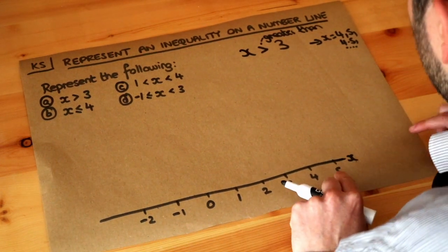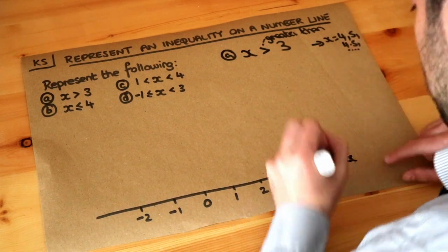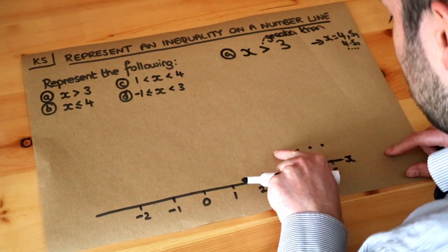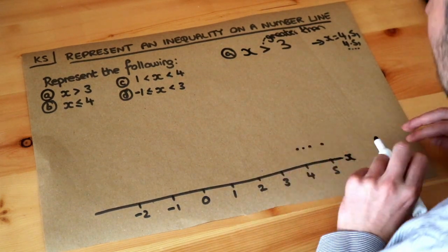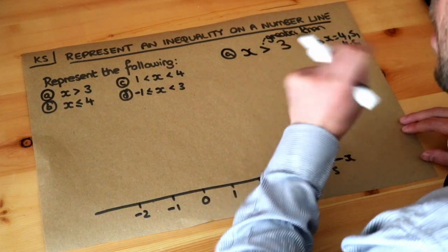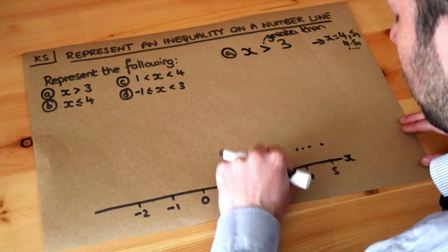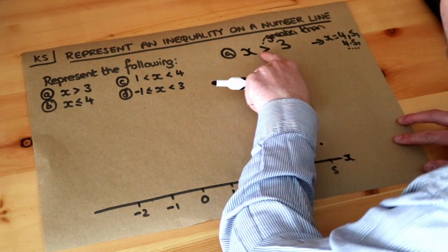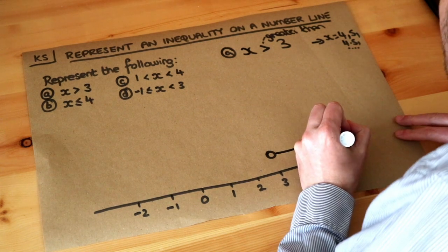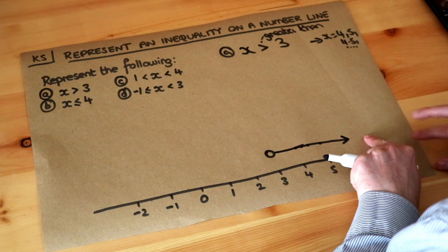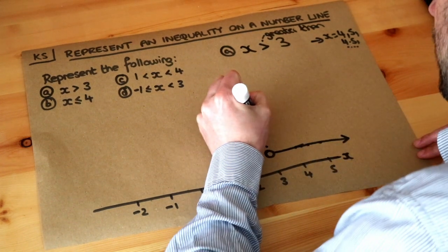We want to represent these on a number line. In this case where x is greater than 3, if we put 4 on the number line it could be here, 5 would be here, 4.5 here. We get lots of different dots which we can combine into a line. We're saying x can be any value greater than 3 but not including 3, so we put an open circle at 3. The open circle means we don't include 3. Then we draw a line going up to infinity with an arrow — x could be 100, or even a billion, since a billion is greater than 3.